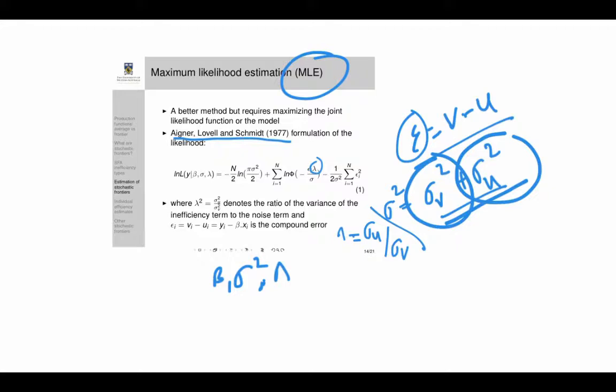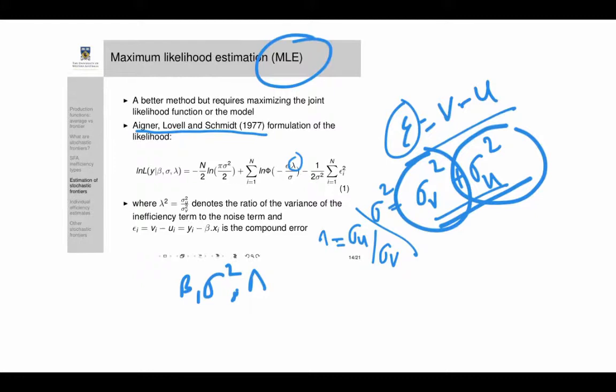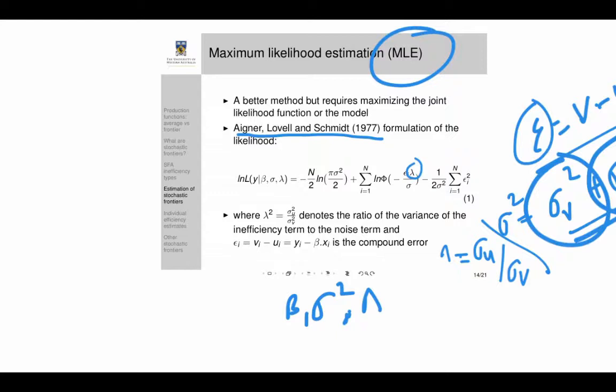This log-likelihood form is for the half-normal distribution. If you use an exponential distribution, you get a slightly different form; similarly for the truncated normal. The gamma distribution requires simulated maximum likelihood and produces yet another form. So the likelihood specification changes depending on which distribution is assumed for U.